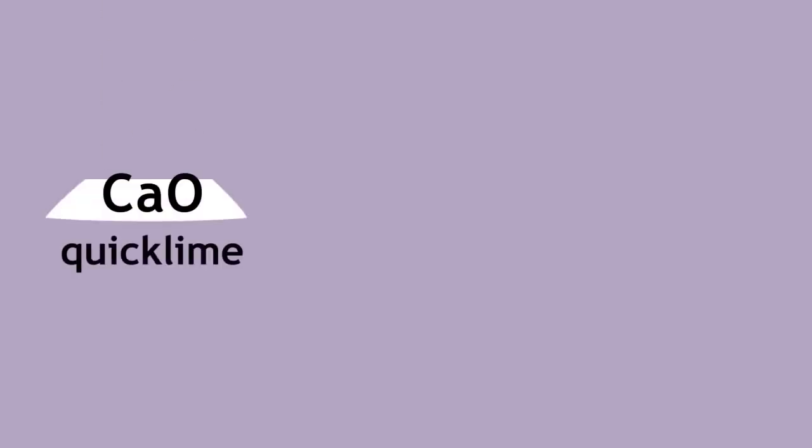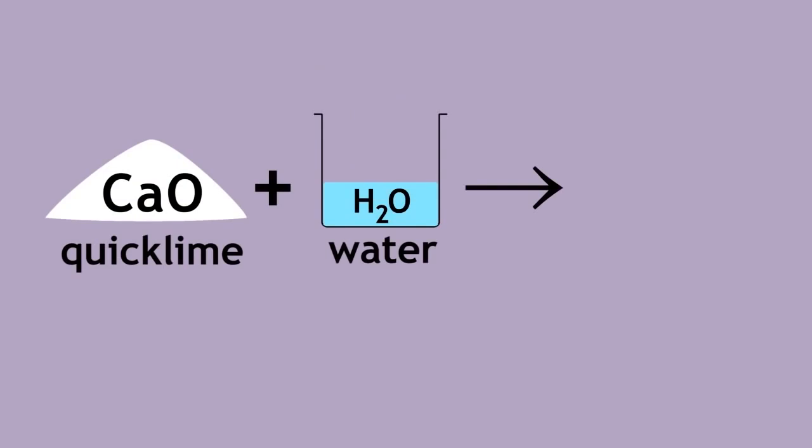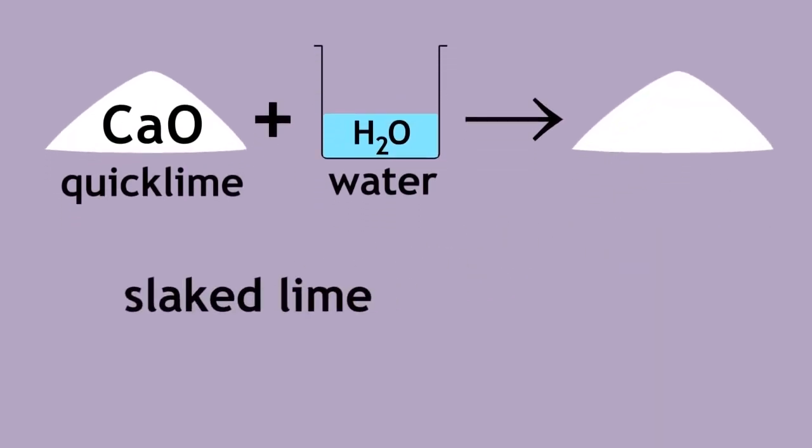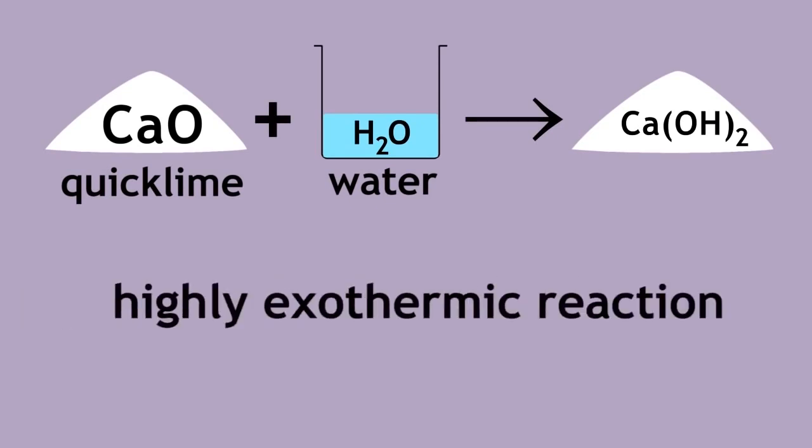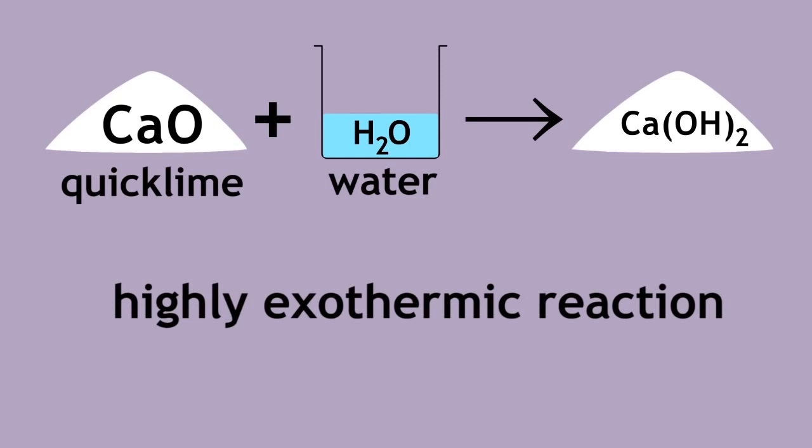The reaction of quicklime with water produces slaked lime. The chemical name for slaked lime is calcium hydroxide. This is a highly exothermic reaction, and the industrial process is called slaking.